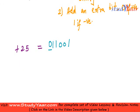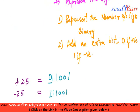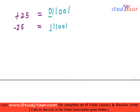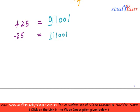Similarly, to represent -25, repeat the same process. First, 25 in binary is 1 1 0 0 1. Then add a 1 to the left since the number is negative. That's how you represent a number in sign magnitude method.